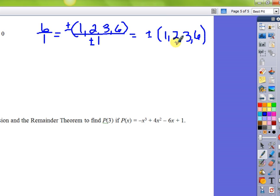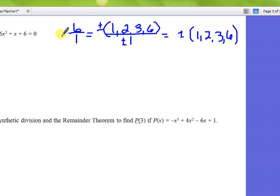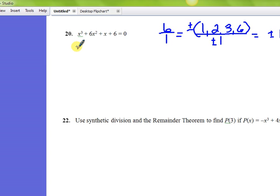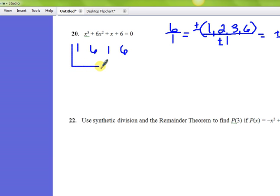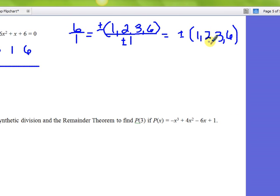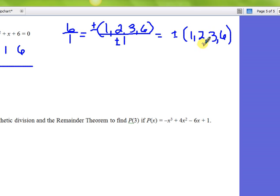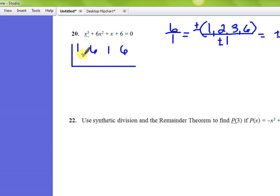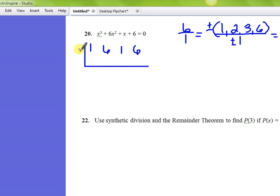So to find out whether or not they work, we're going to again use synthetic division and we're going to test these values. We have to do all eight of them, and the sad thing is we might get through all eight and not find a single one. Again, you're wanting the remainder to be zero because if the remainder is zero you have found a factor—that's the factor theorem. So let's start with, let's just start in the middle of the list. I like to do that, so I'm going to start with the three.